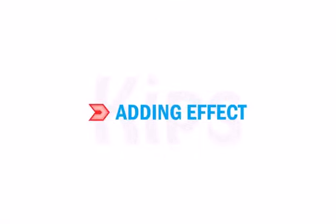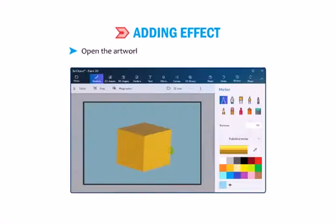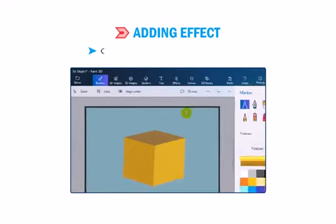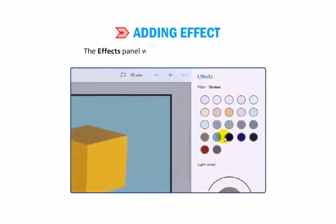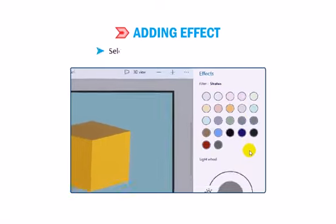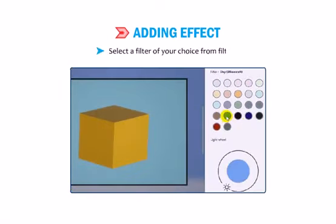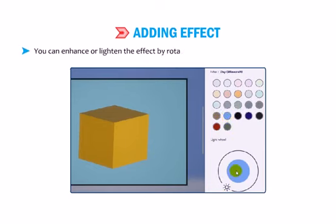Now, let me tell you how to add an effect. Open the artwork you have already saved using Paint 3D. Click on the Effects icon on the top menu. The Effects panel will appear on the right-hand side. Select a filter of your choice from Filters. Click on the filter to apply the effect. You can enhance or lighten the effect by rotating the Sun icon on the Effects panel.